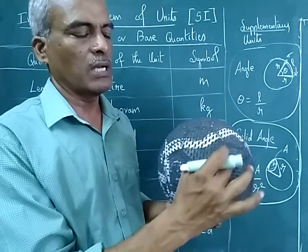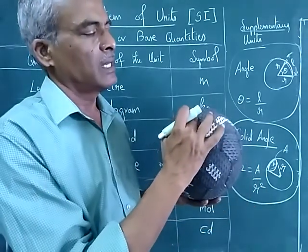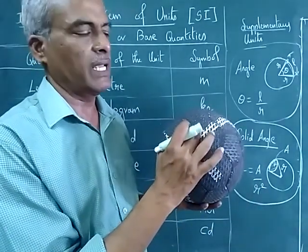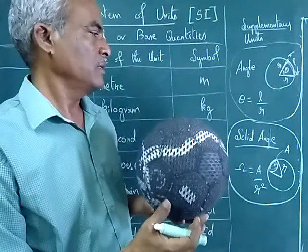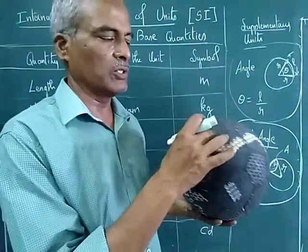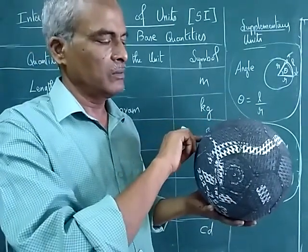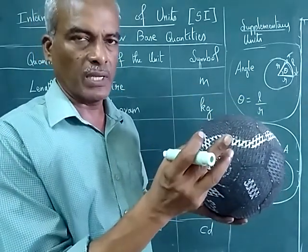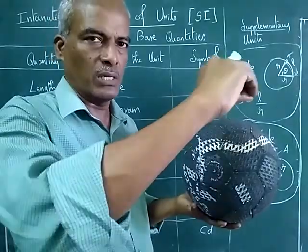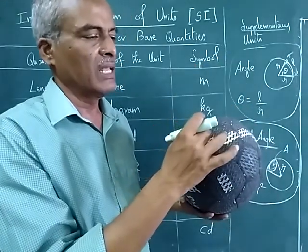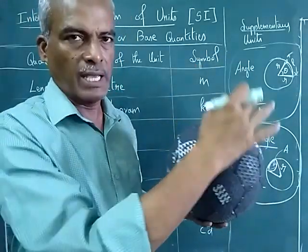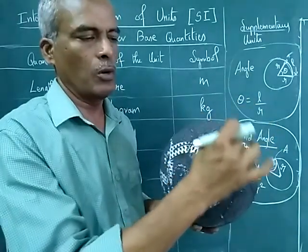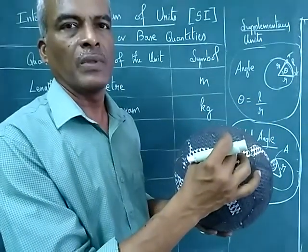For example, I am considering this area, say A. Now I think you have understood. From the origin, the radius, here again radius, it is R square. And you can view that volume. So this is area, surface area, a small portion we are considering.